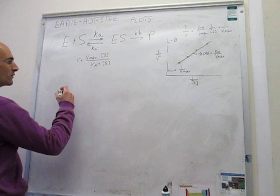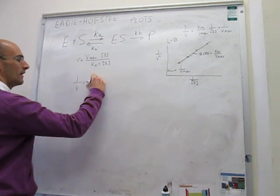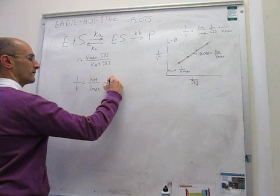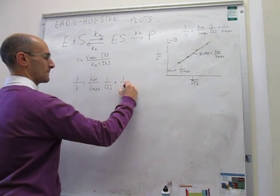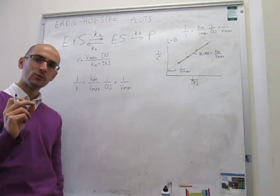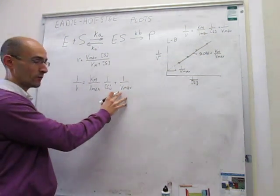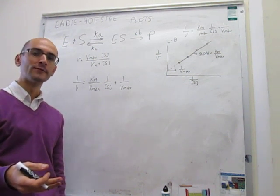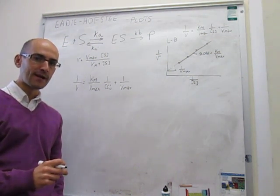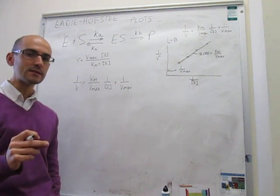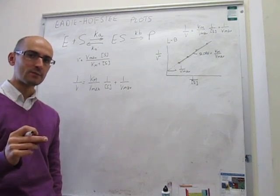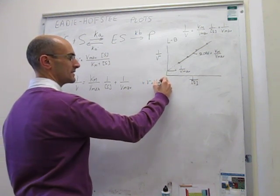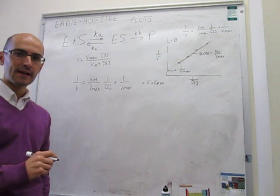To derive the Eadie-Hofstee plot, we start from the Lineweaver-Burk representation. The Lineweaver-Burk equation gives 1/V = (Km/Vmax)(1/[S]) + 1/Vmax. What I want you to do is hit pause and try to modify this expression — multiply everything by V times Vmax — and find the equation of a line, identifying what to plot on the Y and X axes to extract Km and Vmax from the slope and intercept.